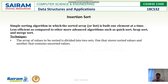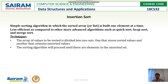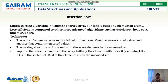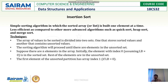The given array elements are divided into two sets: one that stores sorted values and one that stores unsorted values. The sorting algorithm will proceed until there are no elements in the unsorted set — it repeats until every element in the unsorted set is processed. Every element has its own index value, and based on the index value this works.